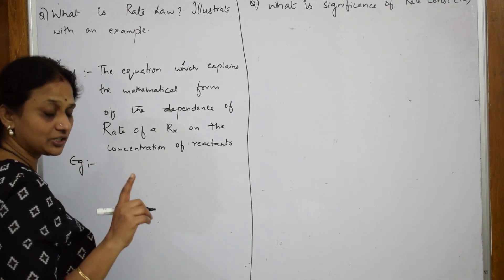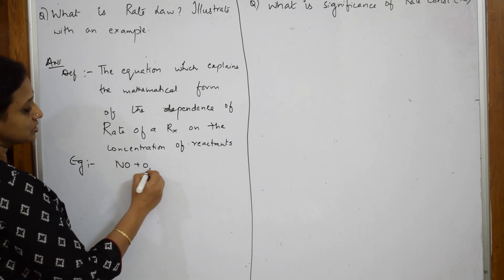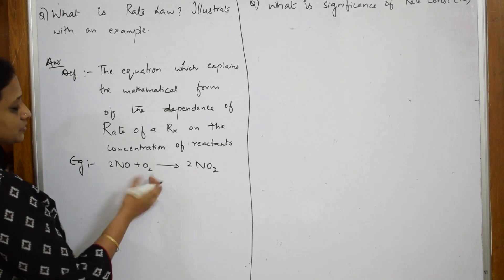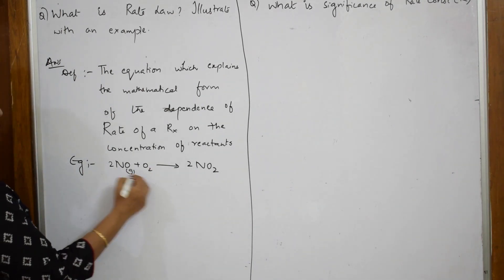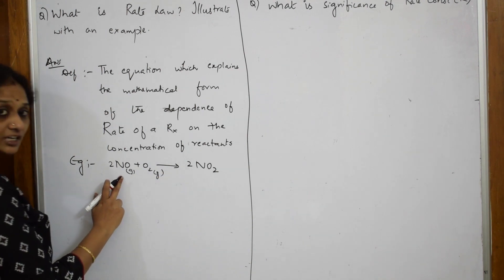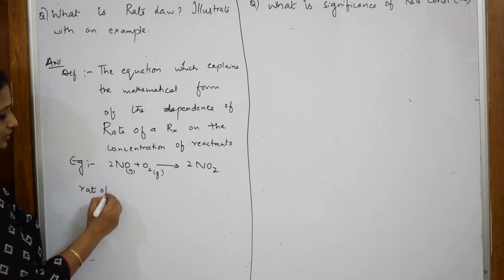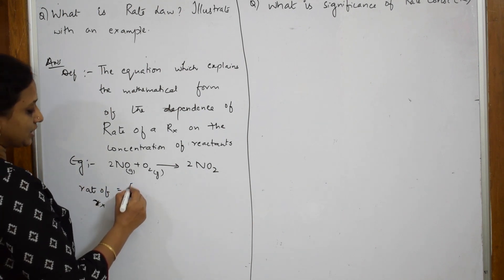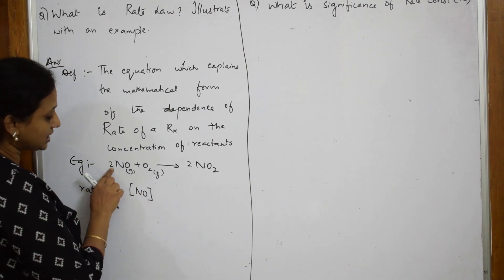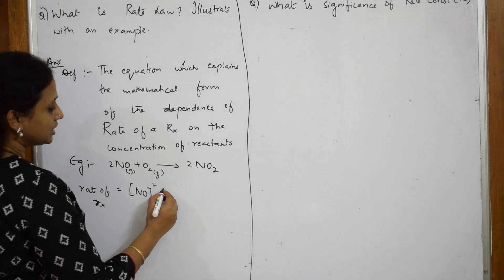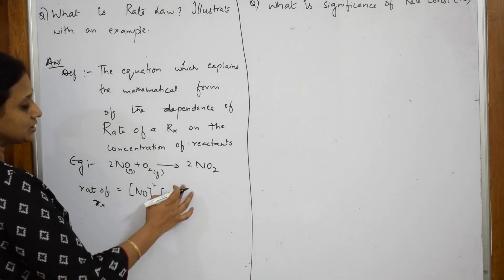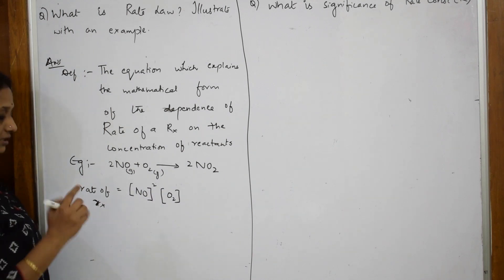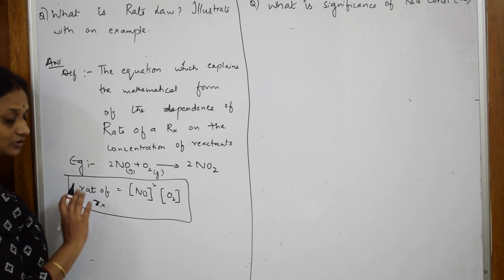I have already done a numerical on average rate of reaction. Let us take: 2NO + O₂ → 2NO₂. This is your reaction in gaseous state. Now observe carefully — if I have to write the rate of this reaction, I am going to write: rate of the reaction = k[NO]²[O₂]. The concentration of the reactant is raised to the power of its coefficient. 2 oxygens here, 2 NO here — so each is raised accordingly. This is how the rate of a reaction is represented using concentration terms.